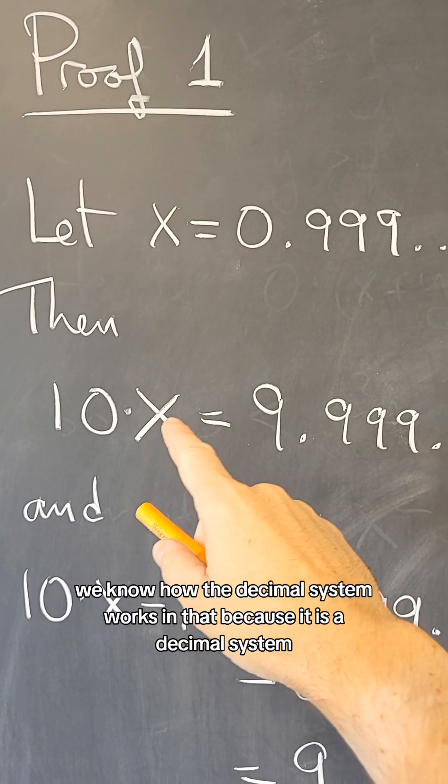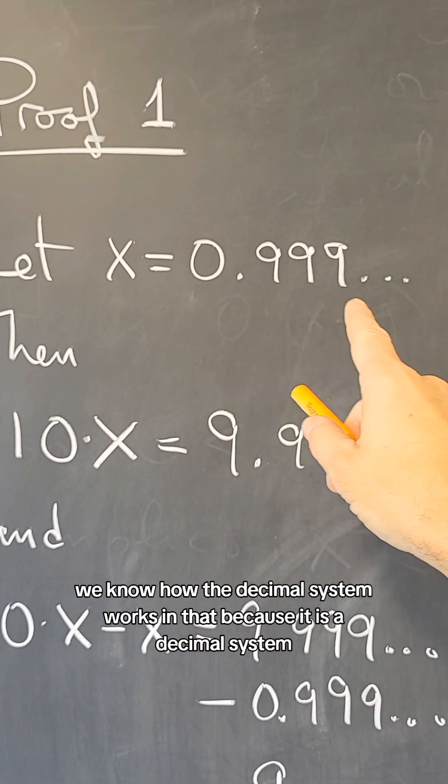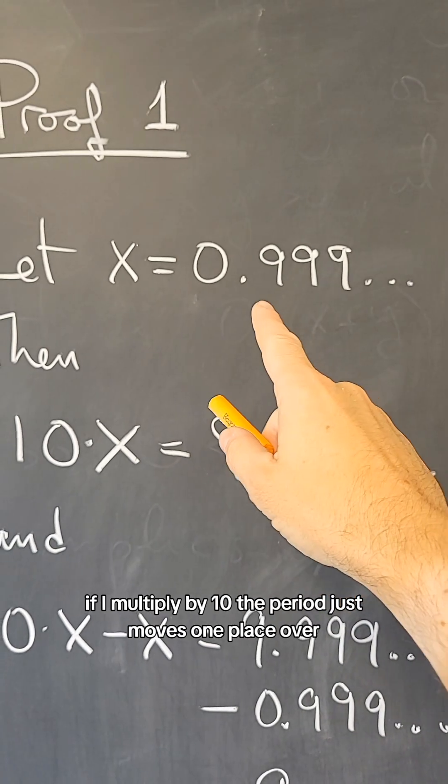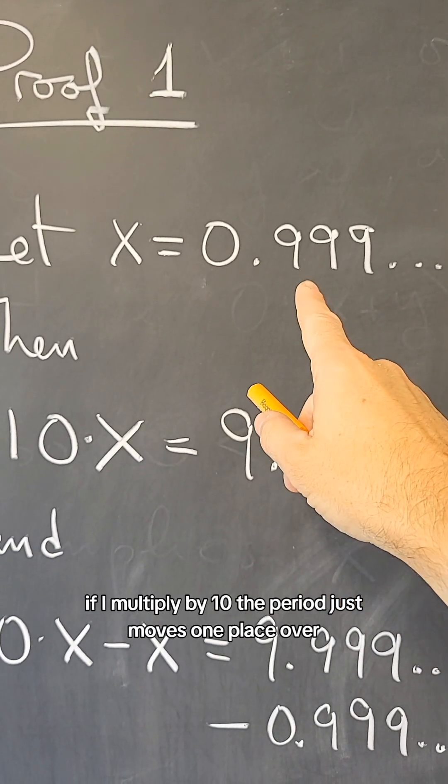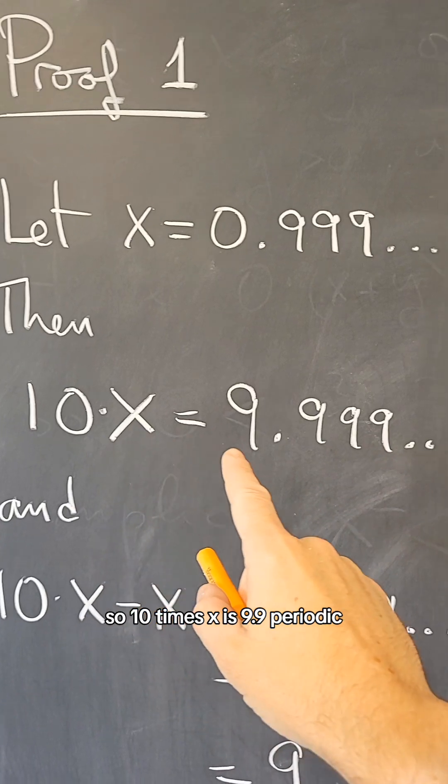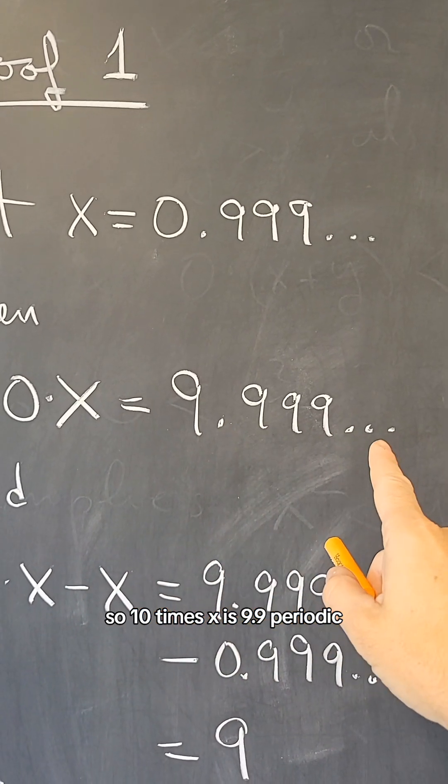We know how the decimal system works in that because it is a decimal system, if I multiply by 10, the period just moves one place over. So 10 times x is 9.9 periodic.